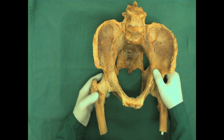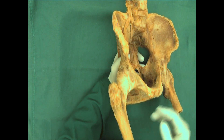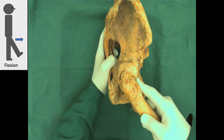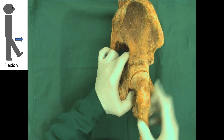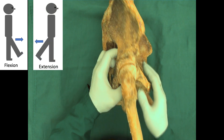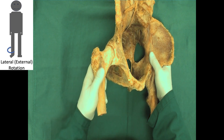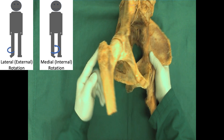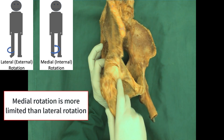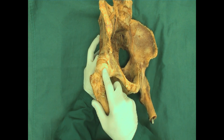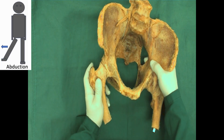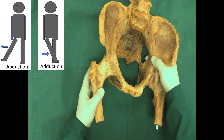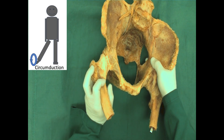Let's go through the movements of the hip joint. As a ball-and-socket joint, the hip can do all types of movements. From the lateral view: flexion and extension — extension is more limited than flexion. Then we have lateral and medial rotation — medial rotation range of motion is less than lateral rotation. We also have abduction, the movement of the femur away from the midline, and adduction. The combination of all these movements is referred to as circumduction.